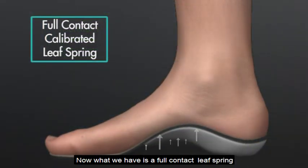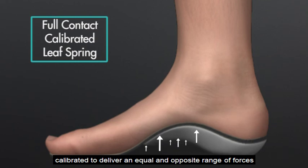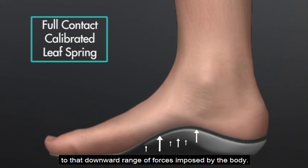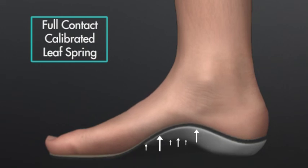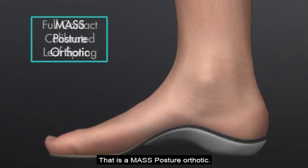We now have a full contact leaf spring calibrated to deliver an equal and opposite range of forces to the downward range of forces imposed by the body. That is a MASS posture orthotic.